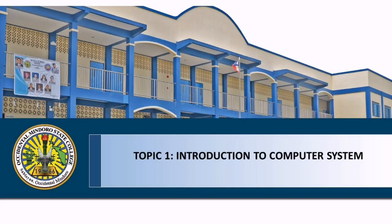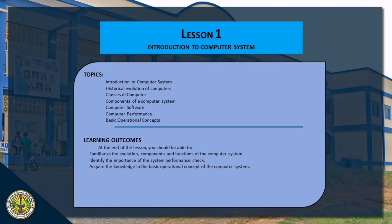Topic 1: Introduction to Computer System. The topics under Lesson 1 are: Introduction to Computer System, Historical Evolution of Computers, Classes of Computers, Components of a Computer System, Computer Software, Computer Performance, and Basic Operational Concepts. For the learning outcomes, at the end of the lesson you should be able to: familiarize the evolution, components, and functions of the computer system; identify the importance of the system performance check; and acquire knowledge in the basic operational concept of the computer system.